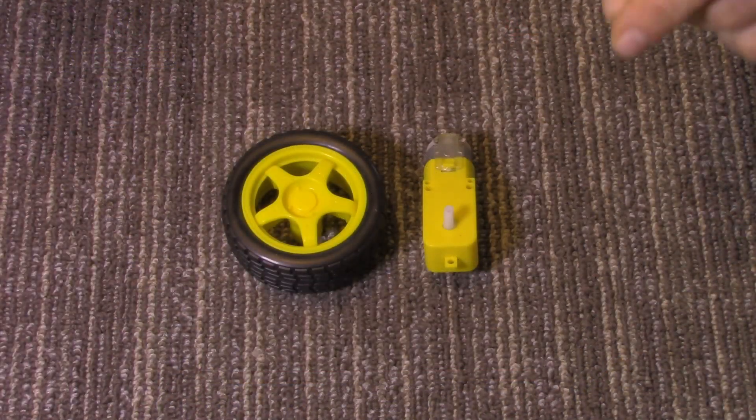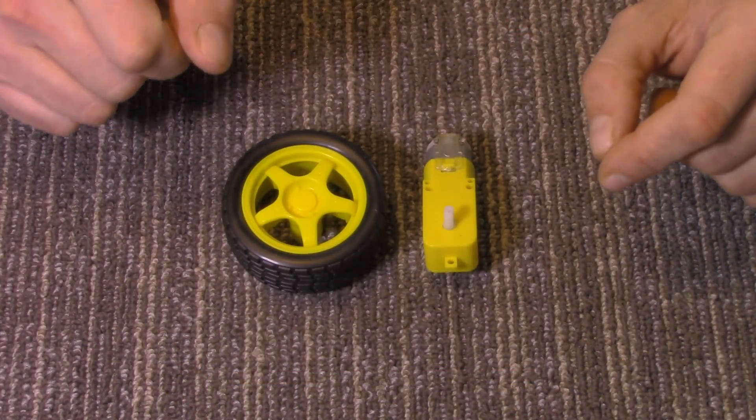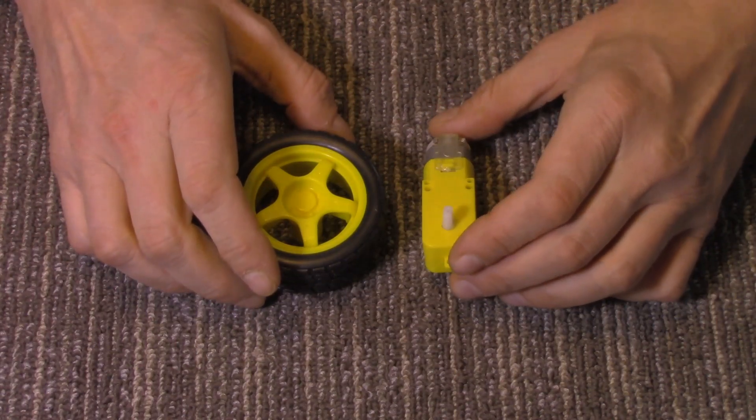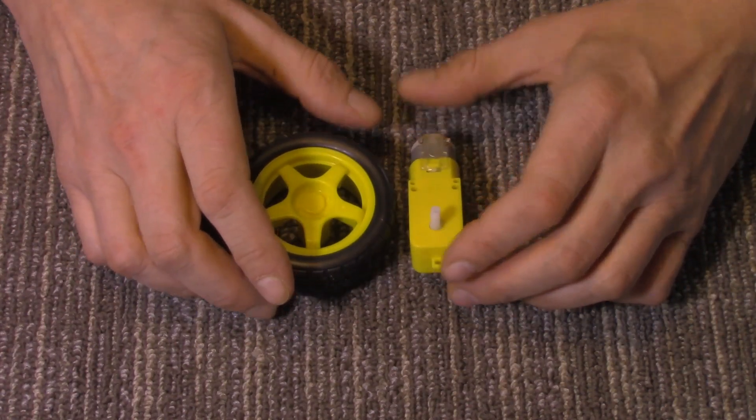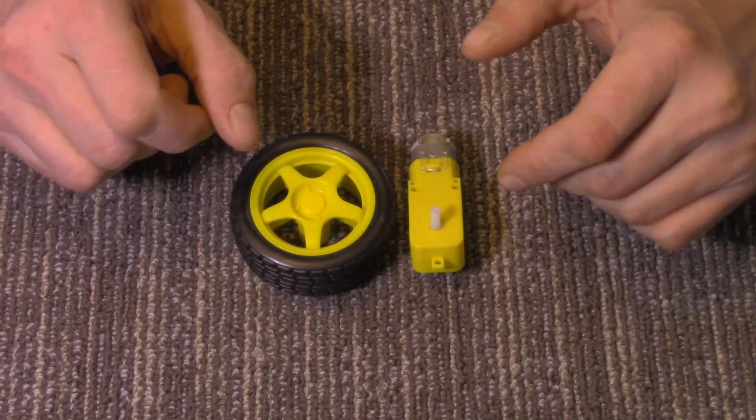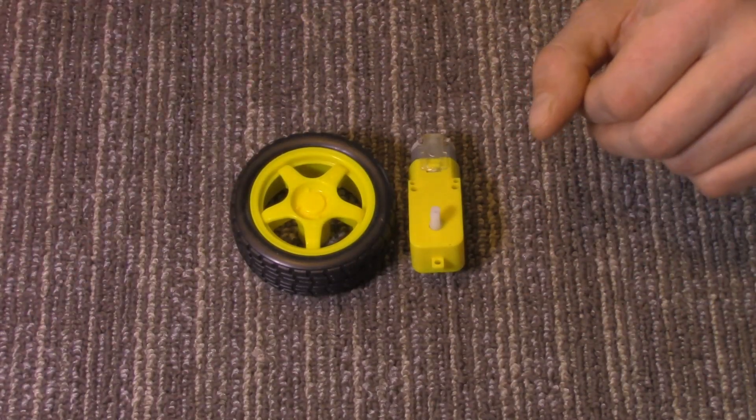Today we're going to take a look at the half-inch PVC mounts for the gear reduction robot wheels that can be commonly found on eBay, Amazon, and places like that.